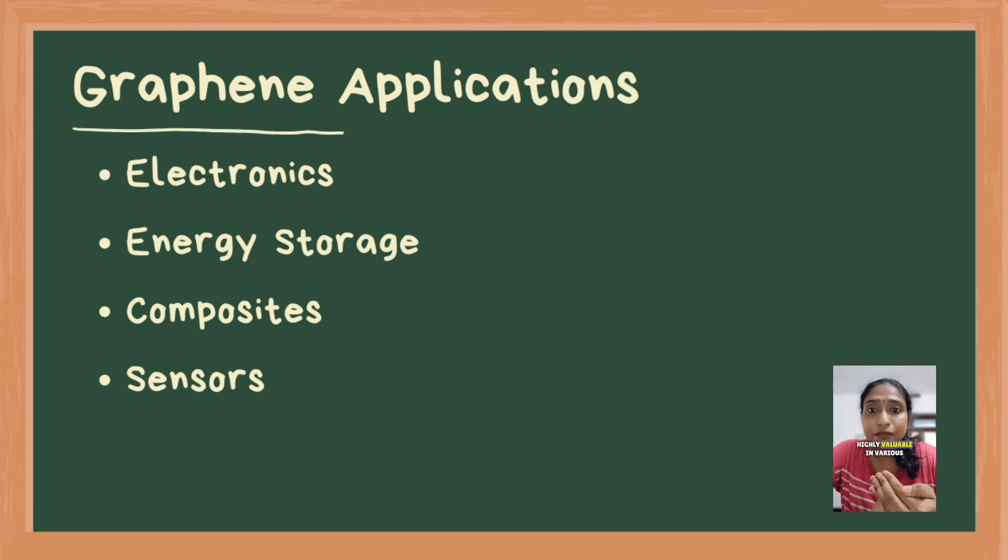These properties make graphene highly valuable in various applications including flexible and transparent electronics, energy storage devices like batteries and supercapacitors, composites that enhance mechanical and thermal properties, and sensors for detecting gases and chemicals in environmental monitoring and healthcare.